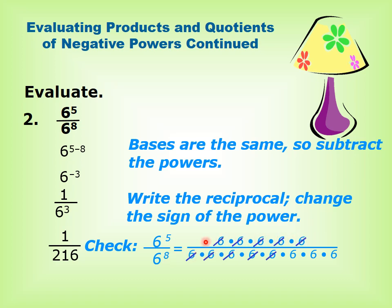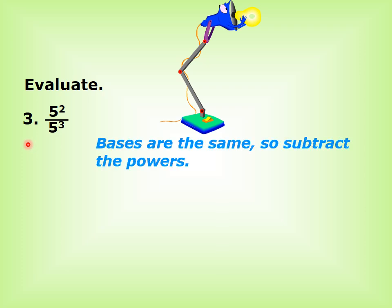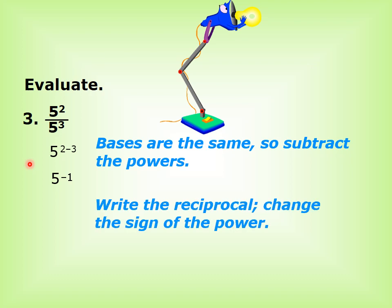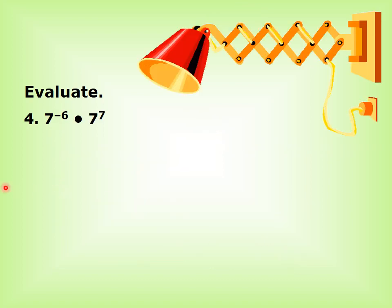We can check: 6 power 5 over 6 power 8, cancelling common factors, gives 1 over 216 — the same answer. Now evaluate 5 power 2 over 5 power 3. The bases are the same, so subtract the powers: 5 power (2 minus 3) equals 5 power negative 1. Write the reciprocal and change the sign: equals 1 over 5 power 1, equals 1 over 5. We can verify this the regular way and it gives the same answer.